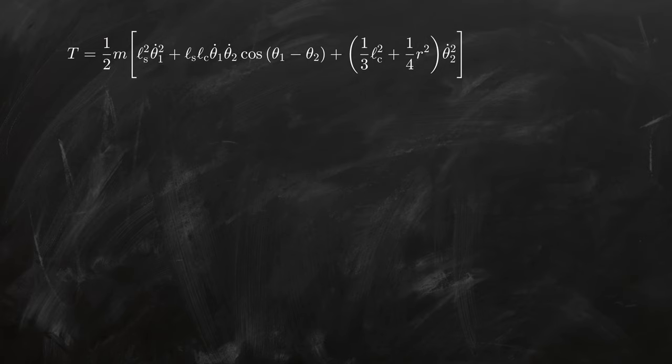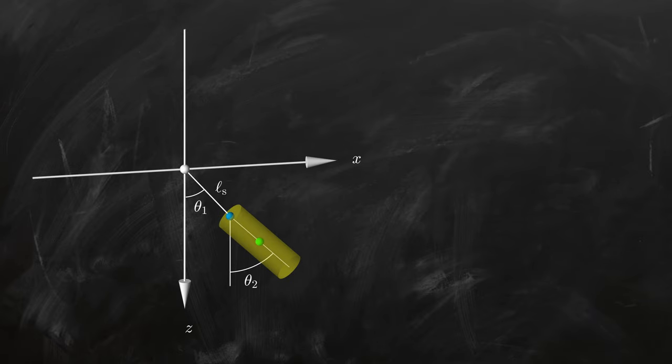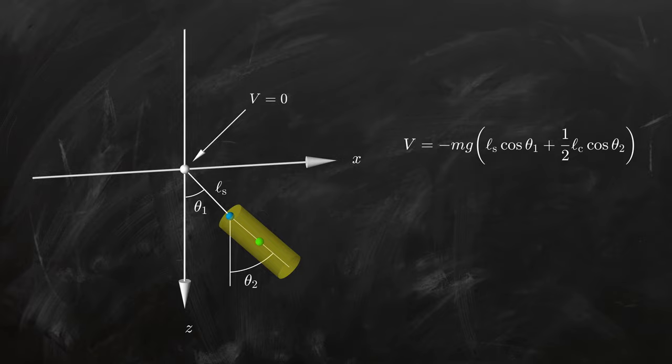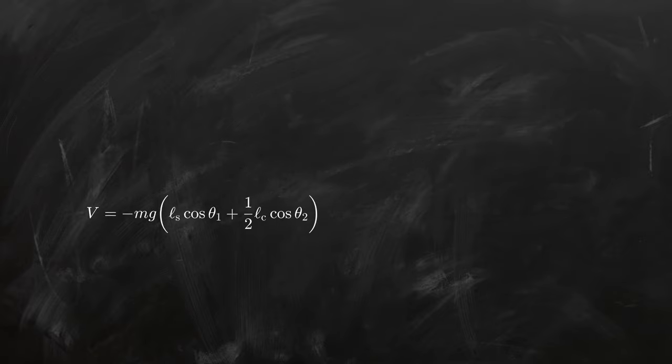Now we need to find the potential energy, so let's return to our diagram for a moment. In the last video, we realized that our choice of zero level for the potential energy doesn't affect the Lagrangian in any significant way. So for simplicity, let's place it at the origin. The potential energy of the cylinder is then given by its mass times the gravitational acceleration times the z-coordinate of the center of mass. We need a minus sign since we're using an upside-down coordinate system, and the potential energy decreases as the z-position increases. Conveniently, we already know the position of the center of mass, so we can just extract the z-component, and we have an expression for the potential energy ready to go along with the one for the kinetic energy.